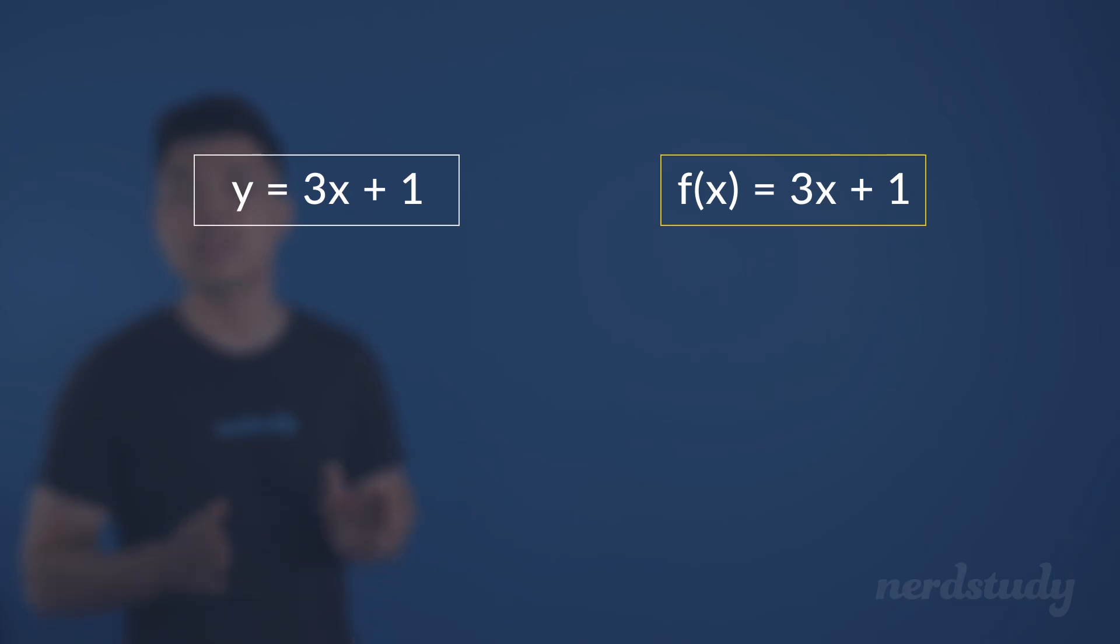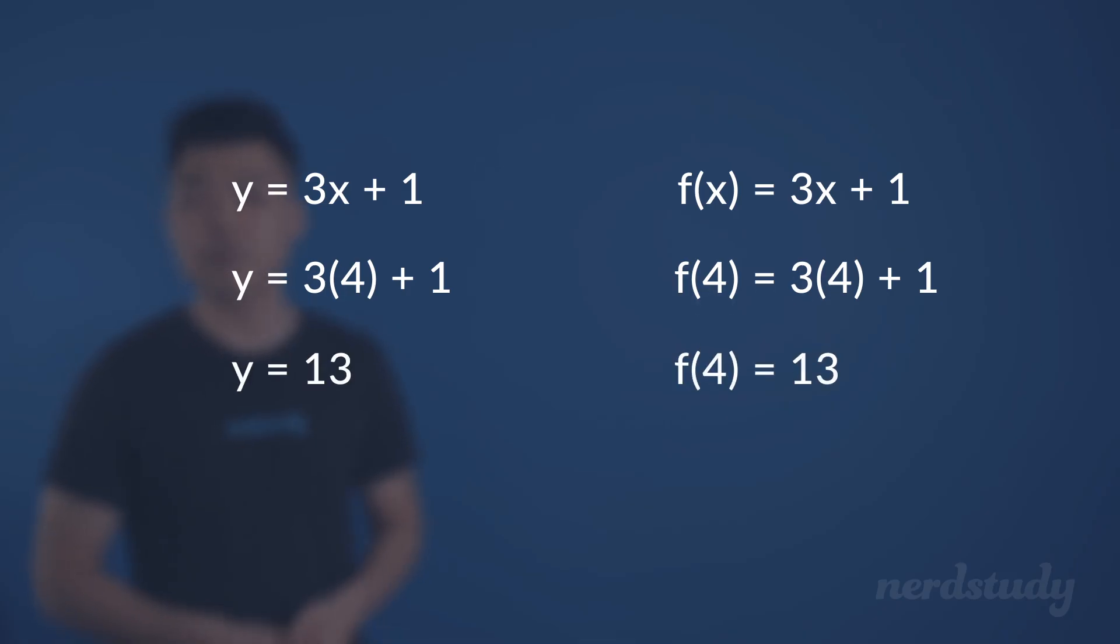Alrighty, so at this point you might be wondering what's the difference between writing y equals 3x plus 1 and f of x equals 3x plus 1 anyways. Well, essentially they are the exact same. If we plug 4 into the x's of each of them and solve for them, we'll see that they do in fact equal the exact same answer.